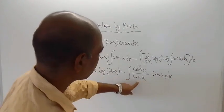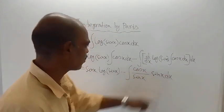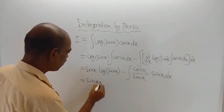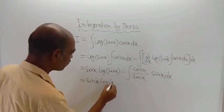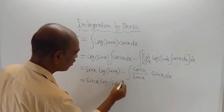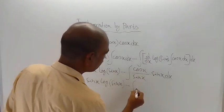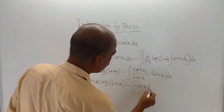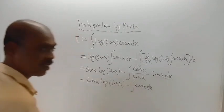This sin x and this sin x are cancelled. The remaining thing is cos x dx. So sin x log of sin x minus integration of cos x dx, because the sin x terms are cancelled.